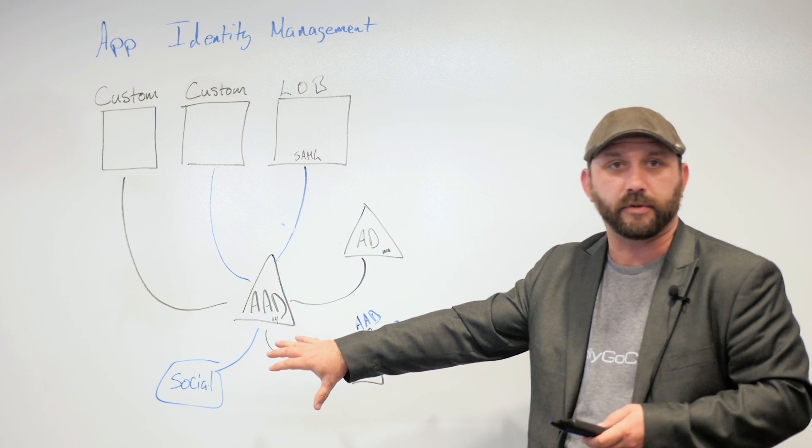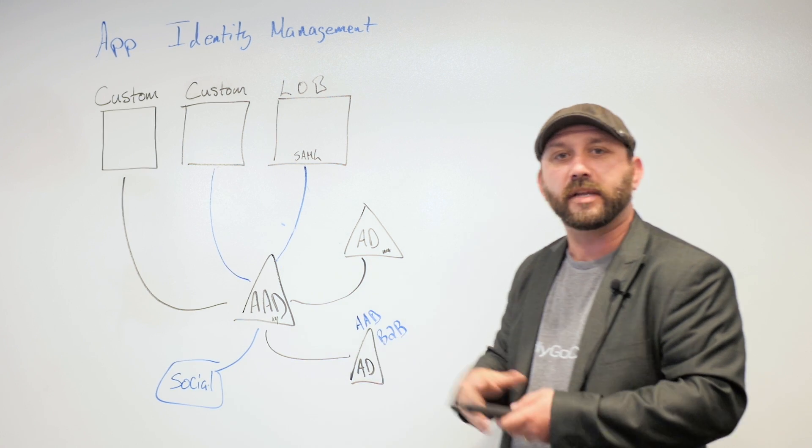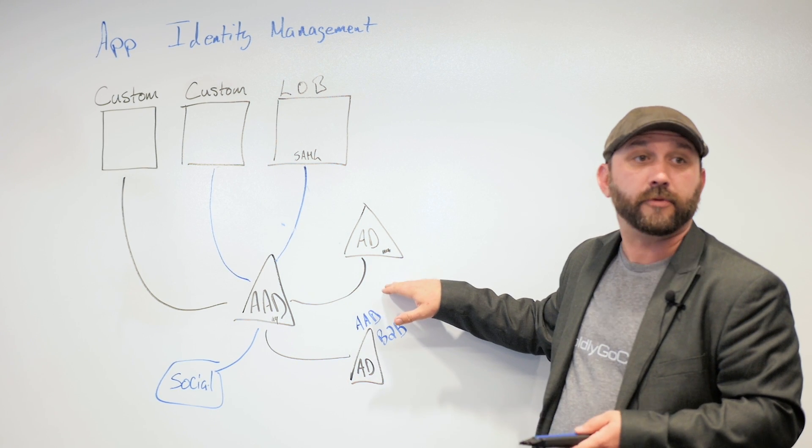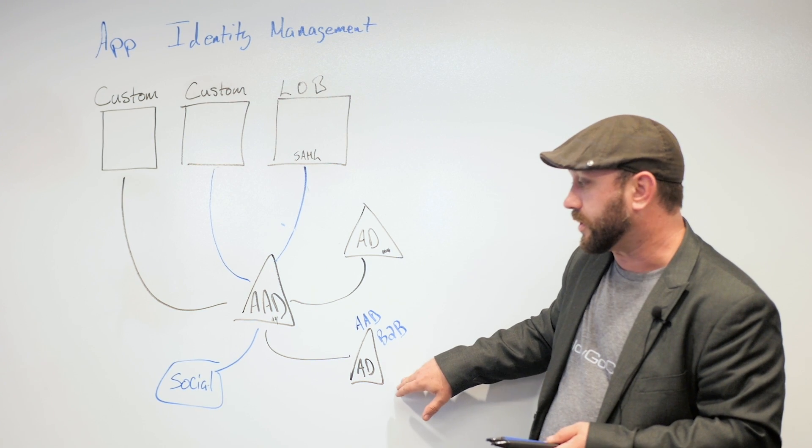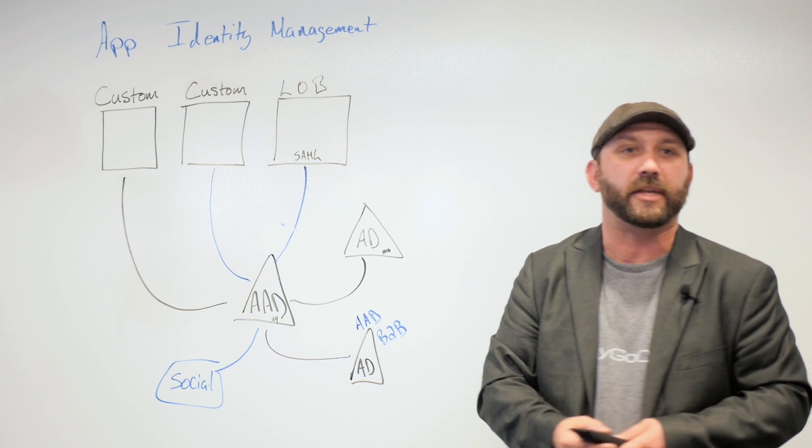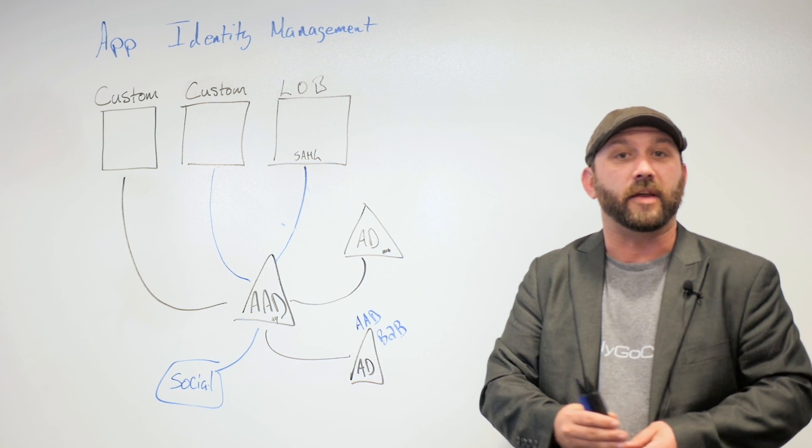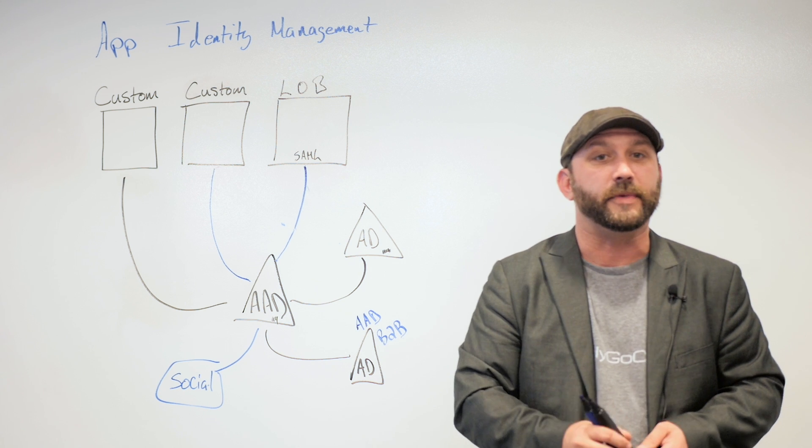And in all of these, we control what users are in there, what access they have, and what applications they can get to. But we have an identity model very similar to Active Directory, which we know and love, that now manages our employees, our partners and customers, even social identities, and provides access to the appropriate applications. So these are the multiple flavors of Azure AD and how it can help with application identity management in the cloud.